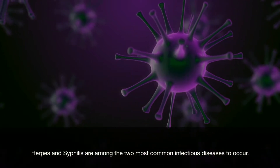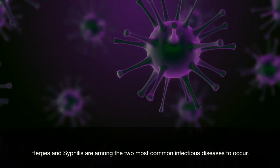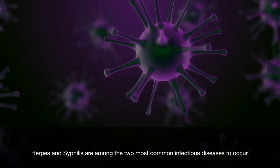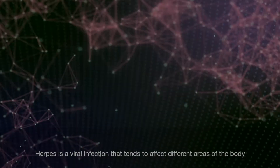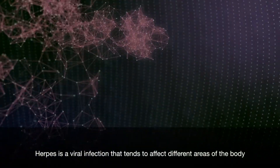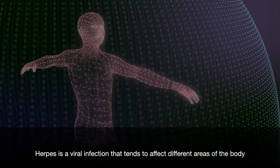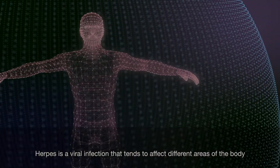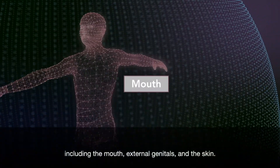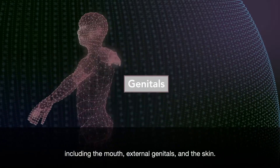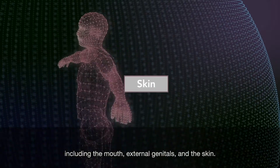Herpes and syphilis are among the two most common infectious diseases to occur. Herpes is a viral infection that tends to affect different areas of the body, including the mouth, external genitals, and skin.